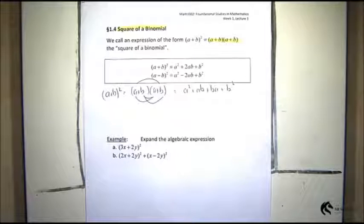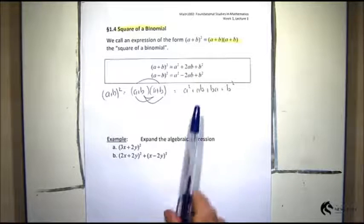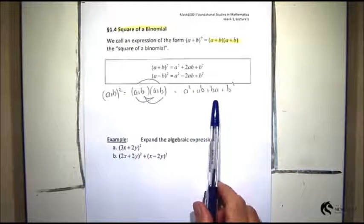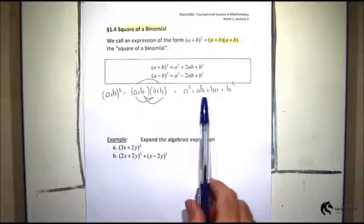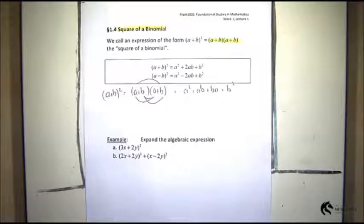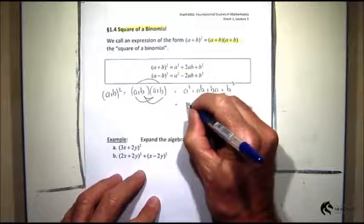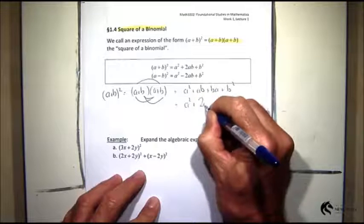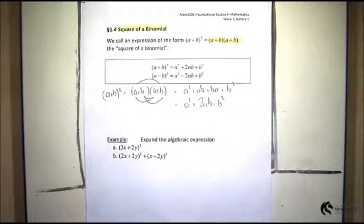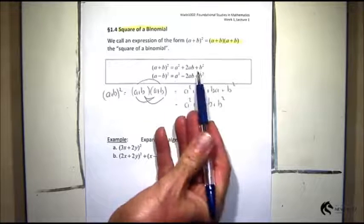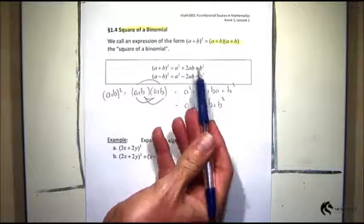Now in here, a times b is the same as b times a. So they are the same number, so I can collect the like terms. And I get a² + 2ab + b². And there is our formula for the square of a binomial.